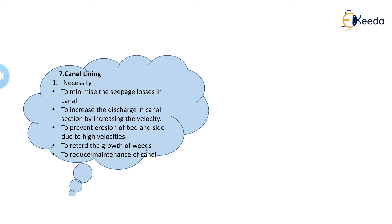Another necessity is to retard the growth of weeds. Since the boundary is a rigid one, the weeds cannot get a proper medium to grow, so we can control weed growth. Also, to reduce the maintenance of the canal — once we provide lining, initially we need a certain cost for this lining purpose, but after that, no maintenance cost is needed for this canal cross section. So by providing lining, we reduce the maintenance of the canal as well.